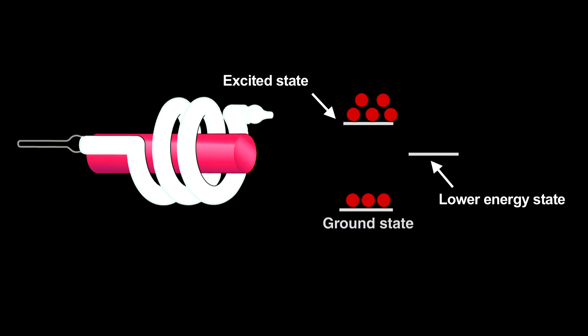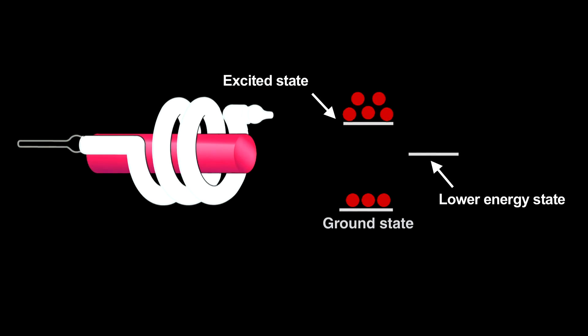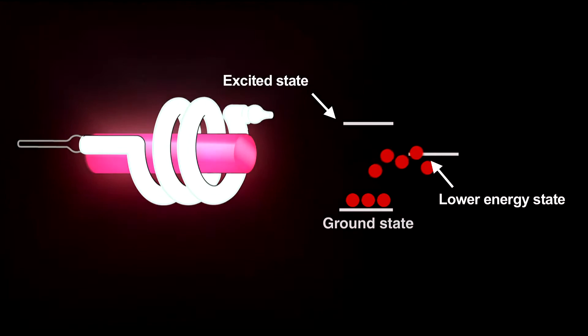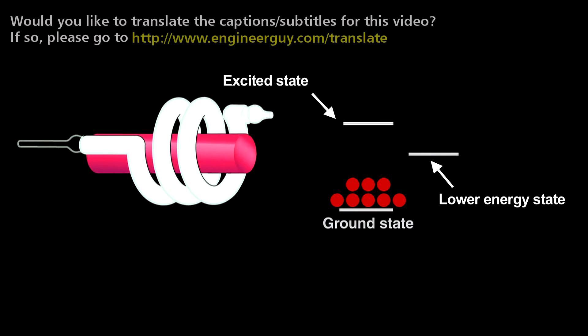Electrons from a population inversion returning to the ground state release light that starts an avalanche called stimulated emission. The photon produced when an electron decays induces other excited electrons to simultaneously decay and release nearly identical photons. That creates coherent light, meaning that the crests and troughs of every light wave in the beam match up.